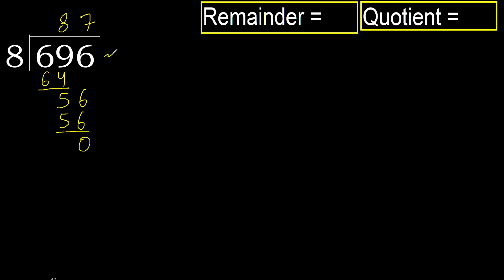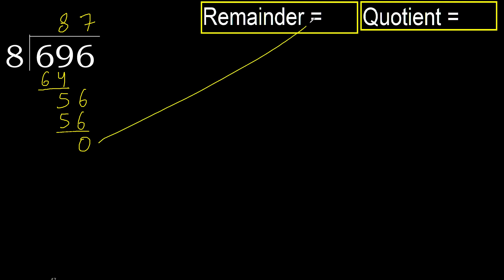Next — there is no more number, therefore finish it. Okay, 0, therefore 696 divided by 8 is complete.